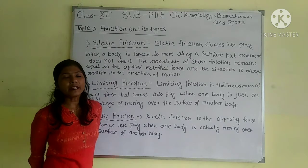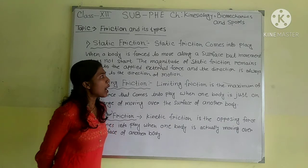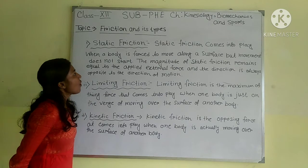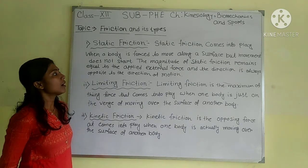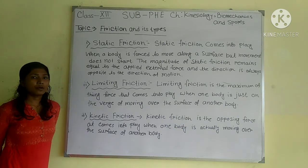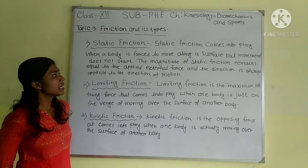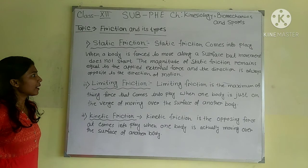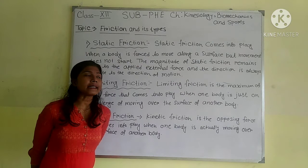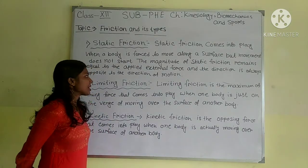Static friction. Static friction comes into place when a body is forced to move over a surface but movement does not start. The magnitude of static friction remains equal to the applied external force and the direction is always opposite to the direction of motion.